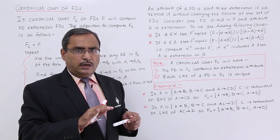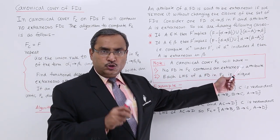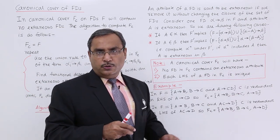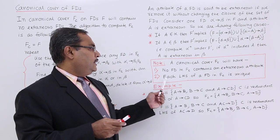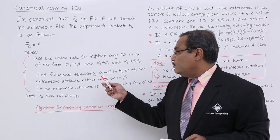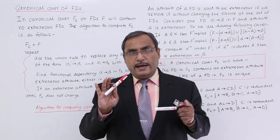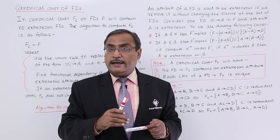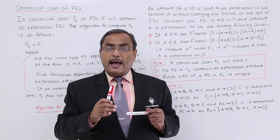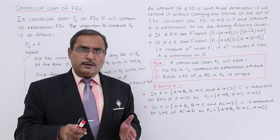A canonical cover fc will have two properties. First, no FD in fc contains an extraneous attribute either on the left-hand side or on the right-hand side. Second, each left-hand side of a functional dependency in fc is unique, because we have already merged functional dependencies using the union rule — so no two functional dependencies will share the same left-hand side. Now let us go through some examples for better understanding.